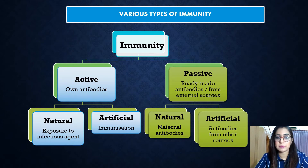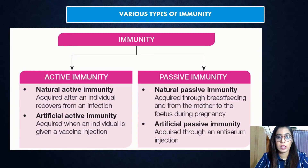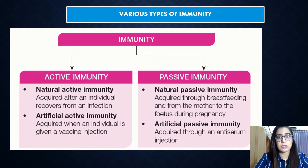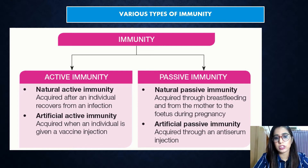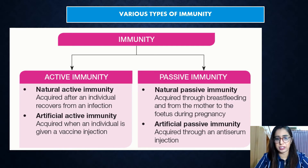Active immunity is when antibodies are produced naturally by the lymphocytes, and it usually remains for a very long time. Passive immunity is when the body does not produce its own antibodies, and it is only short-term. Both active and passive immunity have natural and artificial forms.